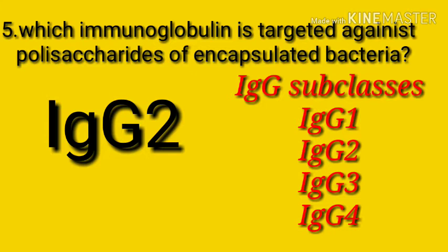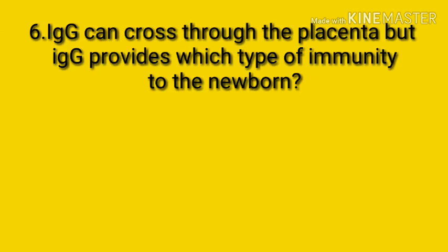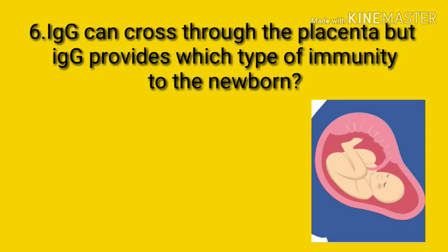IgG4 is present in very low levels in children younger than 10 years of age, so IgG4 deficiency is not usually diagnosed before age 10. IgG4 may also be undetectable in serum of many normal adults, so IgG4 alone is insufficient evidence for an antibody deficiency disorder. The answer to question five is IgG2.